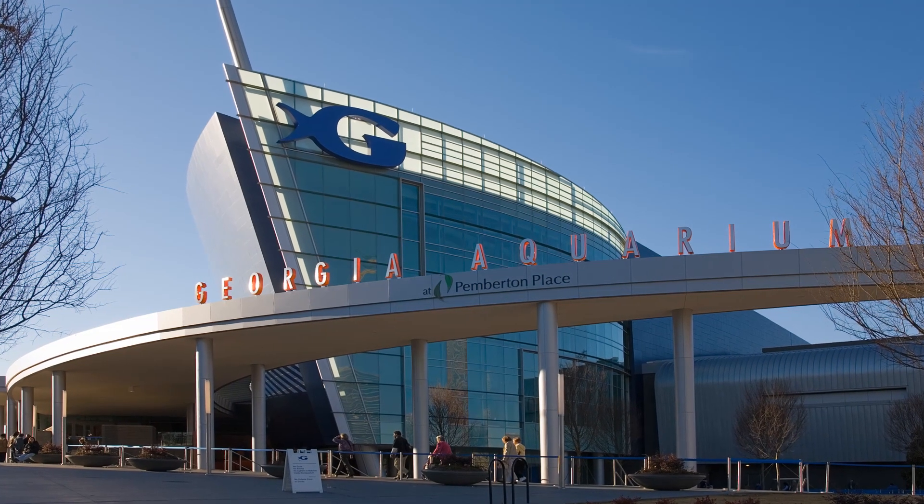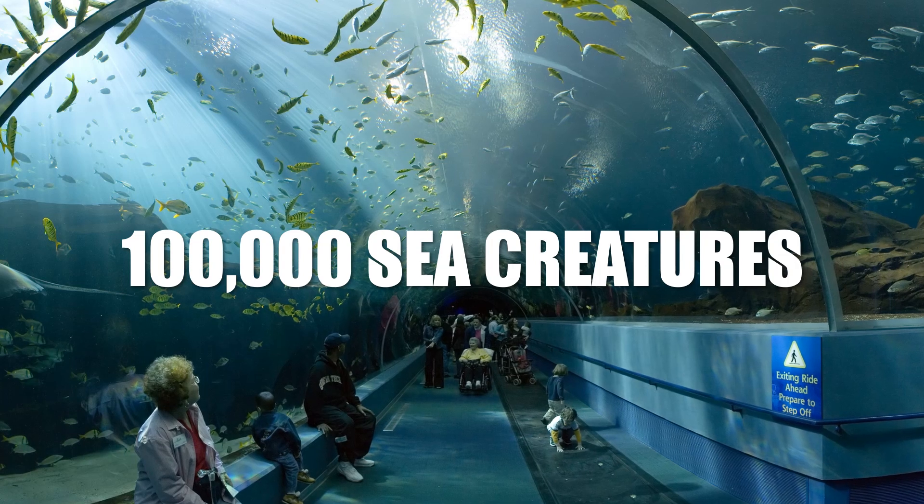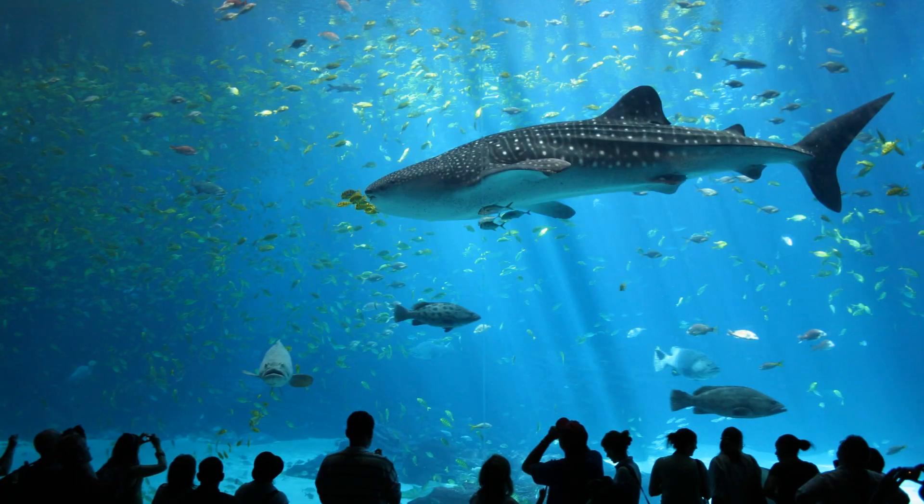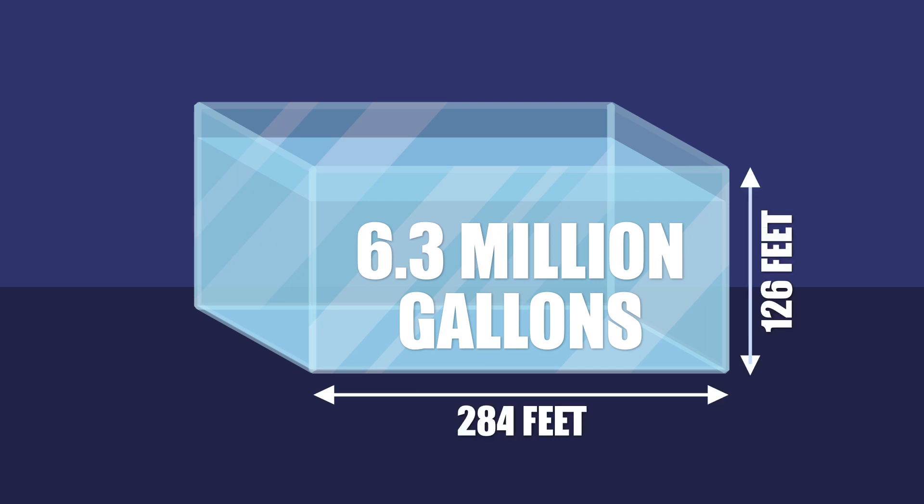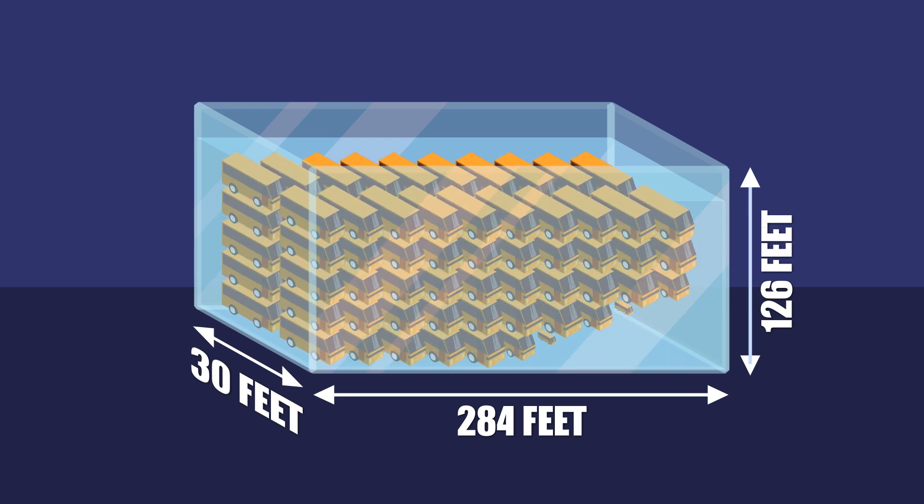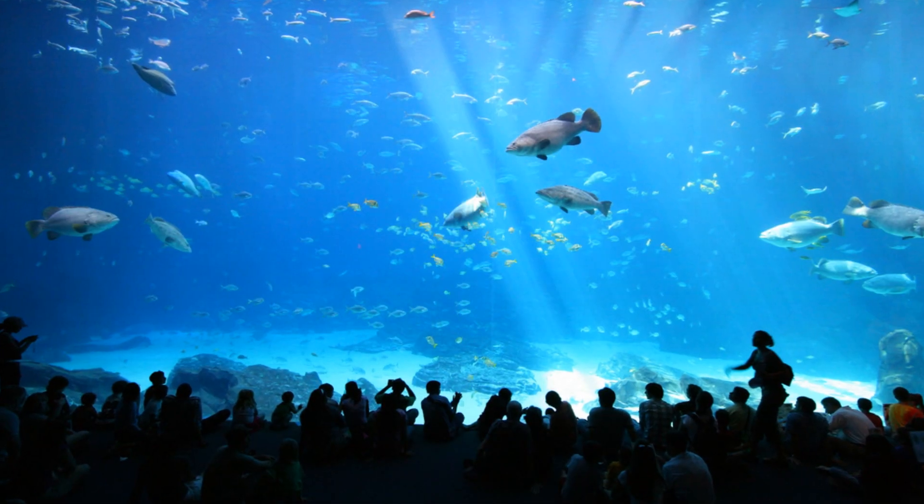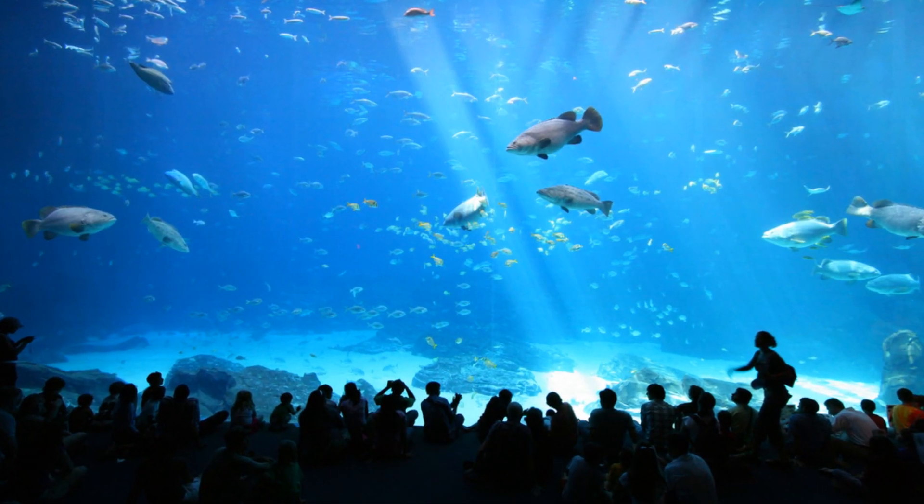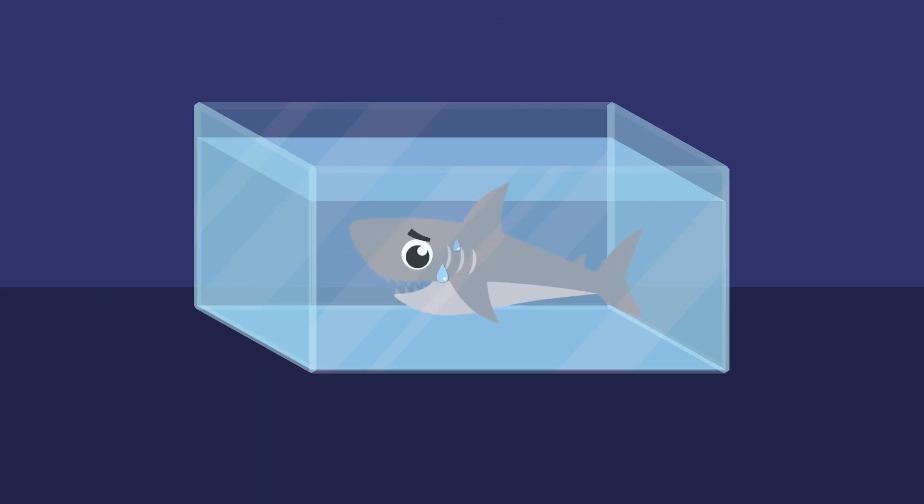By comparison, the largest tank in the world was built at the Georgia Aquarium in Atlanta. It houses over 100,000 individual sea creatures, including their whale sharks. At 6.3 million gallons and 284 by 126 feet, with a maximum depth of 30 feet, it's big enough to park over 100 of your average school buses side by side inside it. There's no denying it's a huge tank by exhibit standards, but it's tiny when you put it next to the actual ocean.